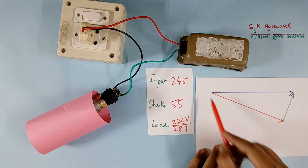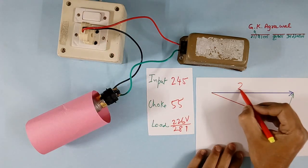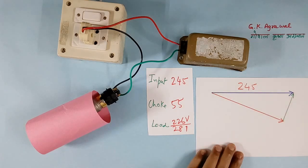This is vector diagram. This is incomer voltage, this is 245V. This is choke voltage, 55V.